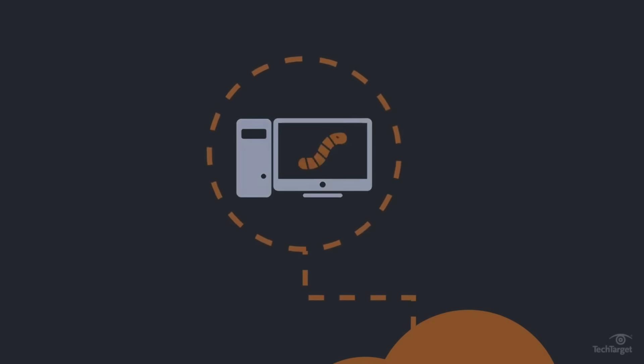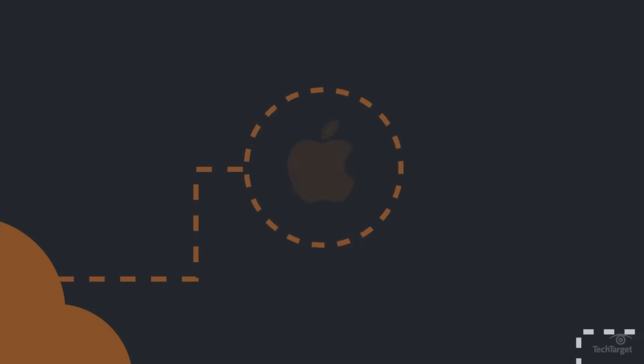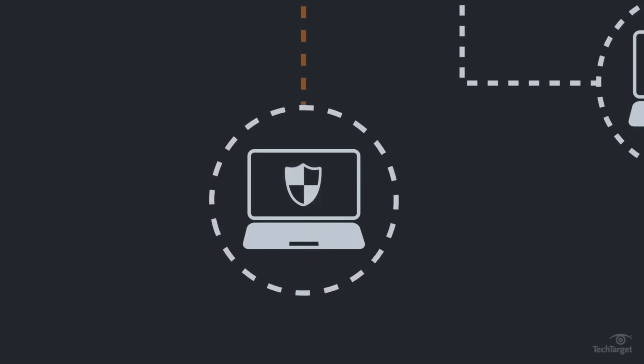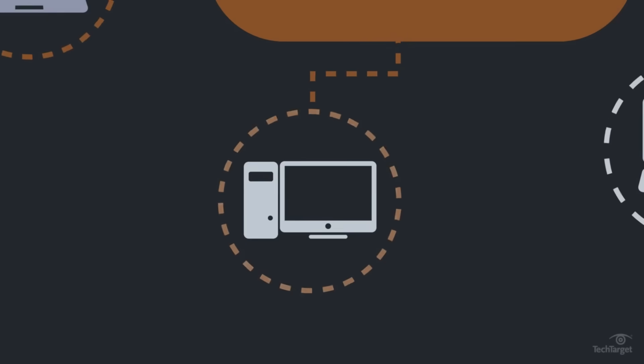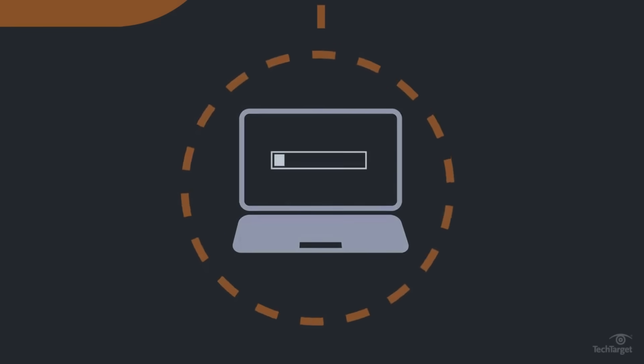Next, we have worms. Unlike viruses, worms can spread independently without the need for human intervention. These self-replicating computer programs exploit vulnerabilities in computer networks and operating systems to spread and infect other computers. Worms can consume a system's resources, congest the network, and even open back doors for hackers to gain unauthorized access.